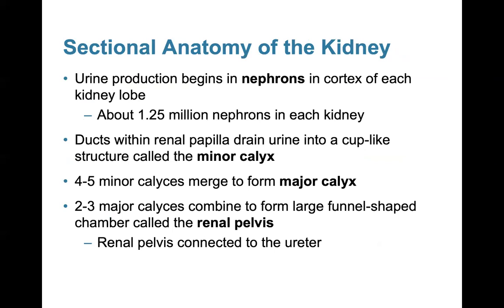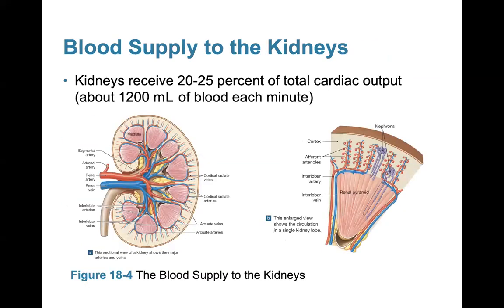Urine production begins in the functional unit of the kidney called the nephron. The nephrons are in the cortex of each kidney lobe, with about 1.25 million nephrons in each kidney. Ducts within the renal papilla drain urine into a cup-like structure called the minor calyx. Four to five minor calyxes merge to form the major calyx, and two to three major calyxes combine to form the renal pelvis, which empties into the ureter.